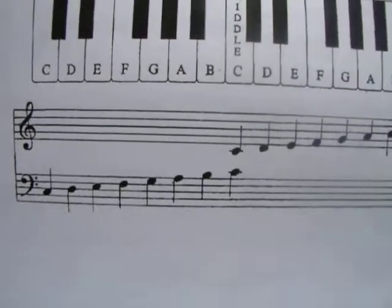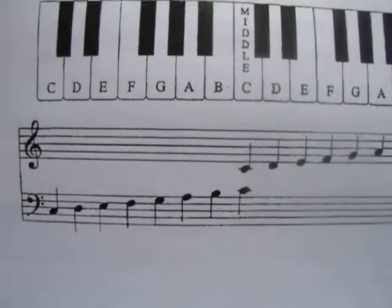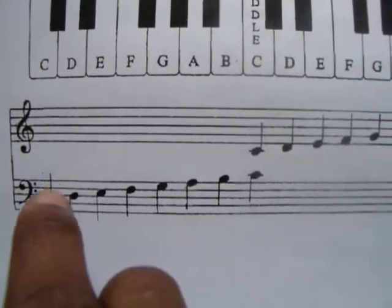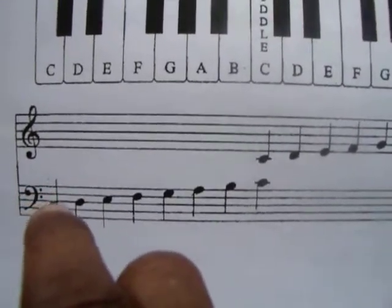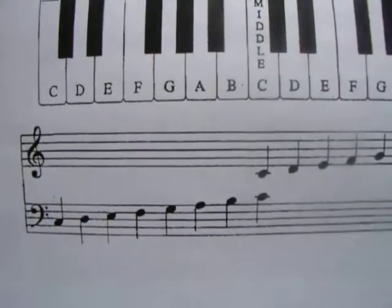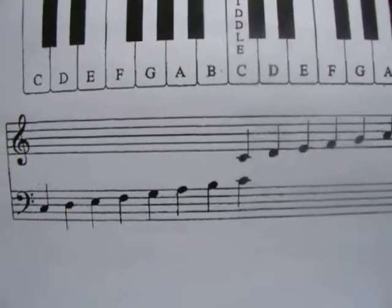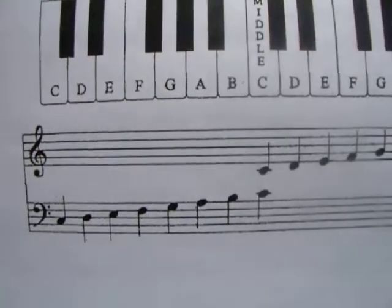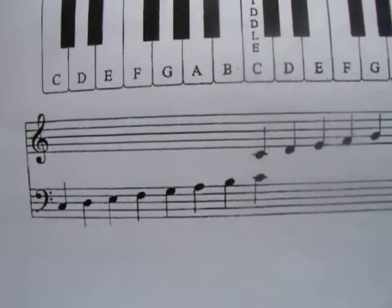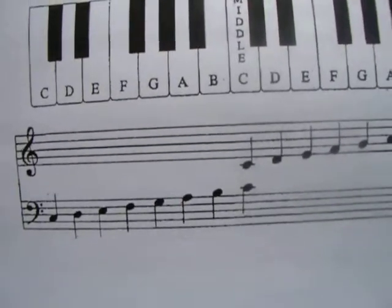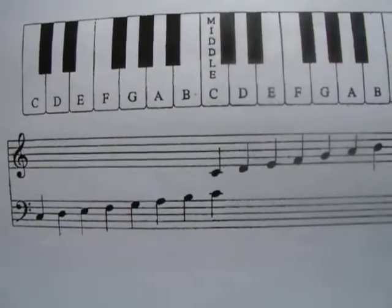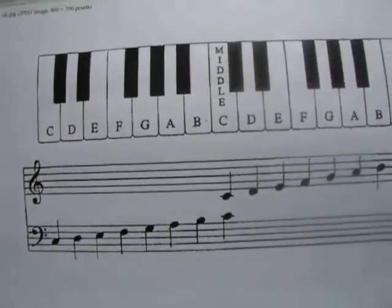It gets its name as being the F clef because where the big dot is and the two smaller dots on the top and bottom of it, that line, that fourth line, is the F line. So if you didn't know where any of the letters are as far as where it appears on the musical staff, the grand staff, if you know where the F is...